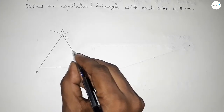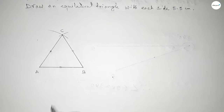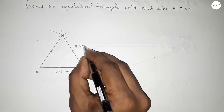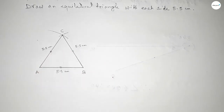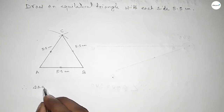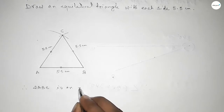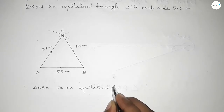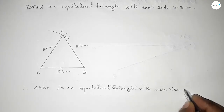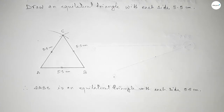Therefore triangle ABC is an equilateral triangle with each side 5.5 centimeters. Mark equal signs on the three sides. By this process we can construct an equilateral triangle with each side 5.5 centimeters. That's all. Thanks for watching. If this video is helpful to you, please share it with your friends.